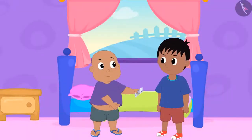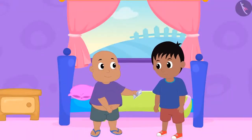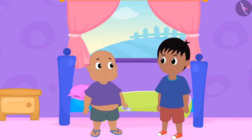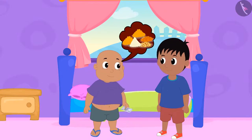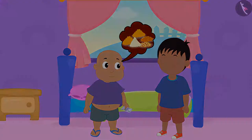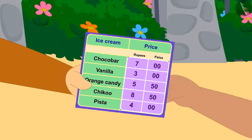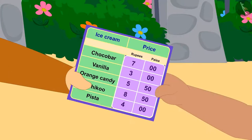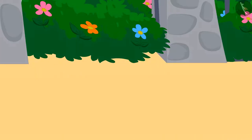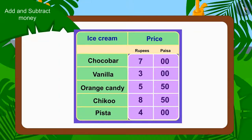Raju and Bablu together have collected rupees 100. Both of them have decided to eat delicious things today with that money. Both of them have come to Babban's ice cream stall first. Babban handed them the menu card of his stall, which has various ice cream names and their prices written on it.